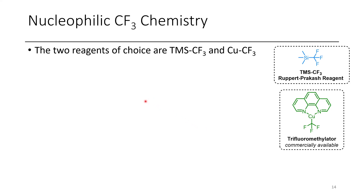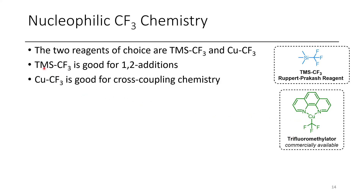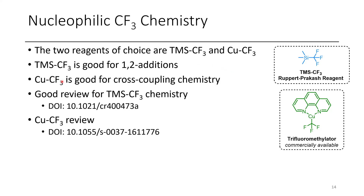The two main reagents used in nucleophilic CF3 chemistry are TMS-CF3 (Ruppert-Prakash reagent) and copper CF3 derivatives. The copper CF3 reagent, called Trifluoromethylator, was developed by Hartwig and co-workers, is commercially available, and is probably the most convenient for cross-coupling. More reactive derivatives exist; typically the Cu(CF3)3 species is the most reactive but requires a ligand for support. TMS-CF3 is good for 1,2-additions to carbonyls, carbonyl derivatives, imines, etc., while copper CF3 is used for cross-coupling chemistry.